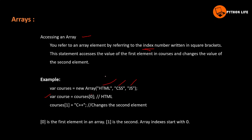Here is an example: var code = courses[0]. The index numbers go 0, 1, 2 — that is n-1. So if there are n elements, the highest index is n-1. For three elements the highest index is 2, because 3-1 equals 2.